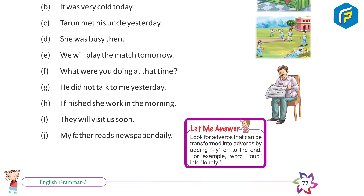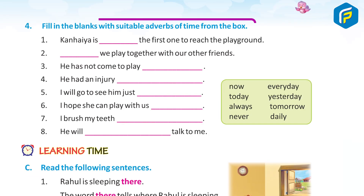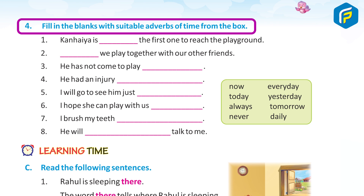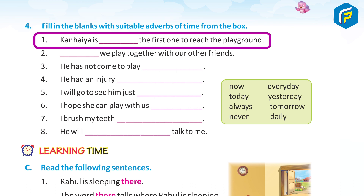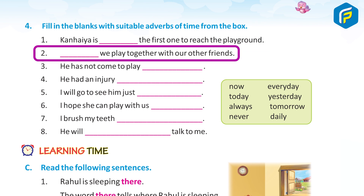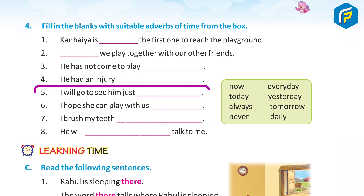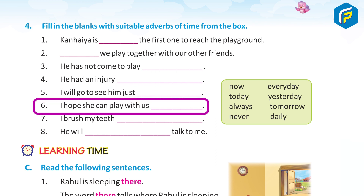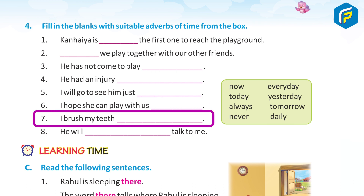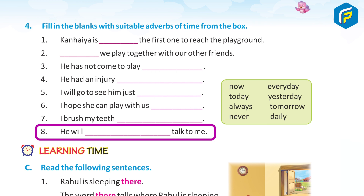Look for adverbs that can be transformed into adverbs by adding -ly to the end, for example the word loud into loudly. 4. Fill in the blanks with a suitable adverb of time from the box. 1. Kanaya is always the first one to reach the playground. 2. Now we play together with our other friends. 3. He has not come to play today. 4. He had an injury yesterday. 5. I will go to see him just tomorrow. 6. I hope she can play with us every day. 7. I brush my teeth daily. 8. He will never talk to me.